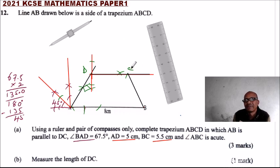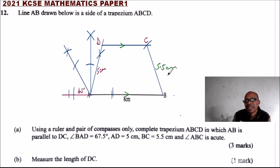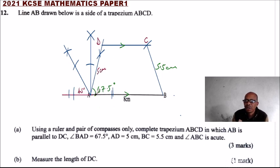Using a computer may not give us the exact figure, so we move to the next page. When you use your ruler and compass correctly, this is what you get — this line is parallel to that line, BC is 5.5 centimeters, and this angle is 67.5 degrees. That is what is being tested: are you able to construct angle 67.5 degrees using a ruler and a compass?